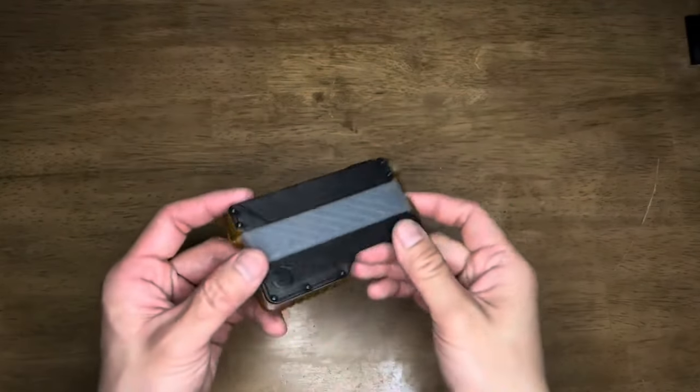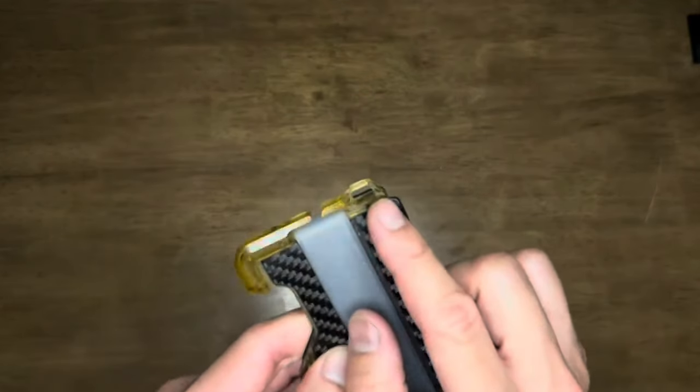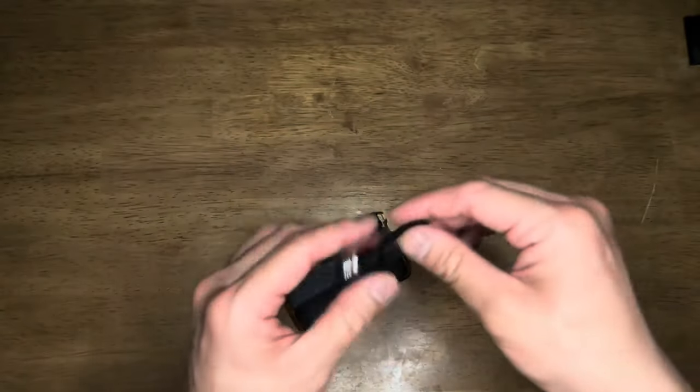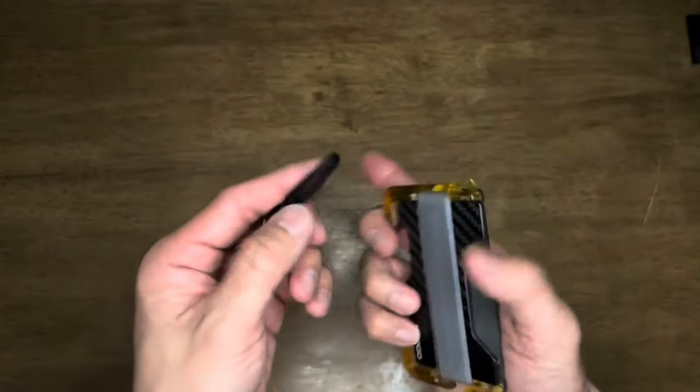Your finished lanyard should go well with most dangle products and everyday carry gear with a lanyard hole. Just take the end of the loop and insert it through the hole.